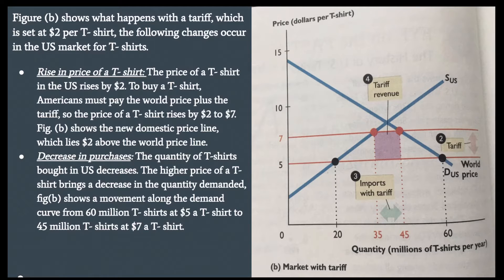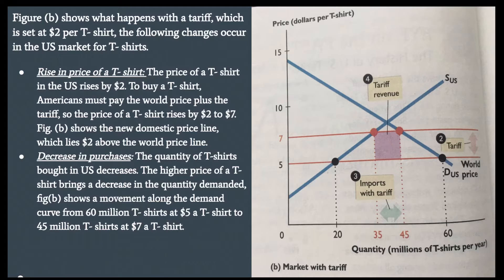Figure B shows what happens with the tariff, which is set at $2 per T-shirt. The following changes occur in the U.S. market for T-shirts. Rise in price of the T-shirt: the price of a T-shirt in the U.S. rises by $2. To buy a T-shirt, Americans must pay the world price plus the tariff, so the price rises by $2 to $7. Figure B shows a new domestic price line which lies $2 above the world price line.